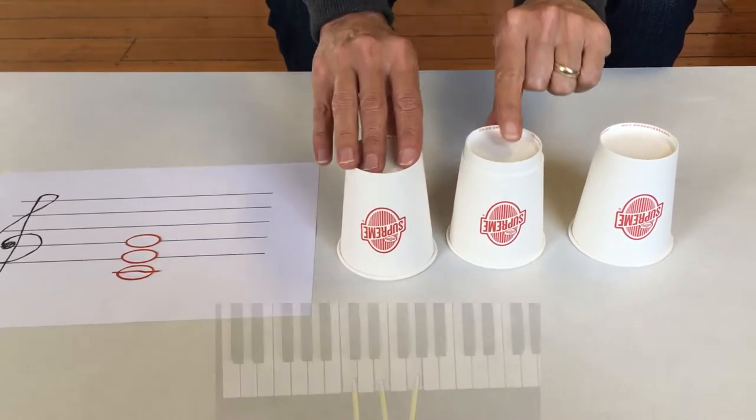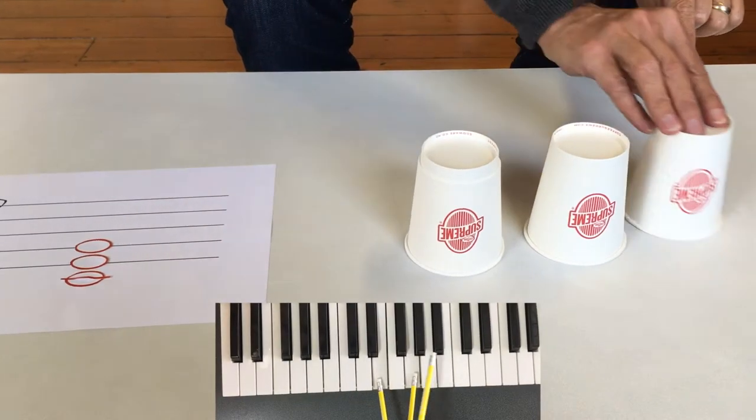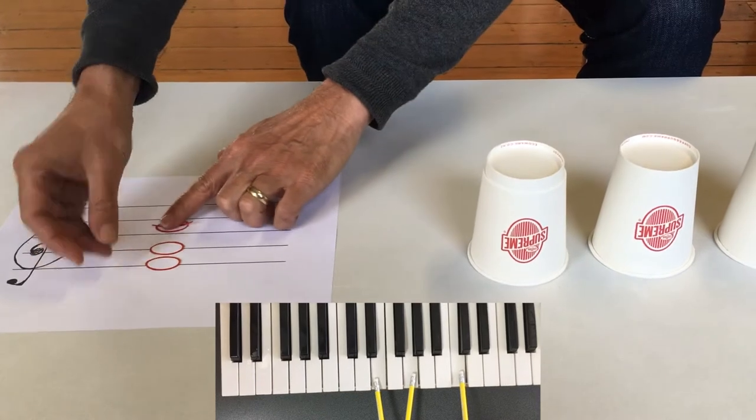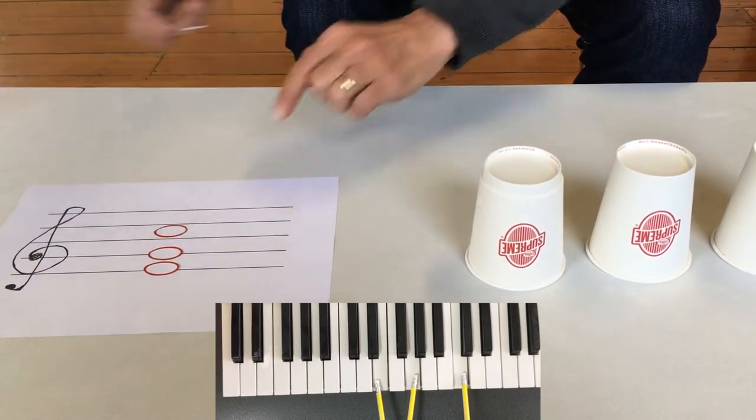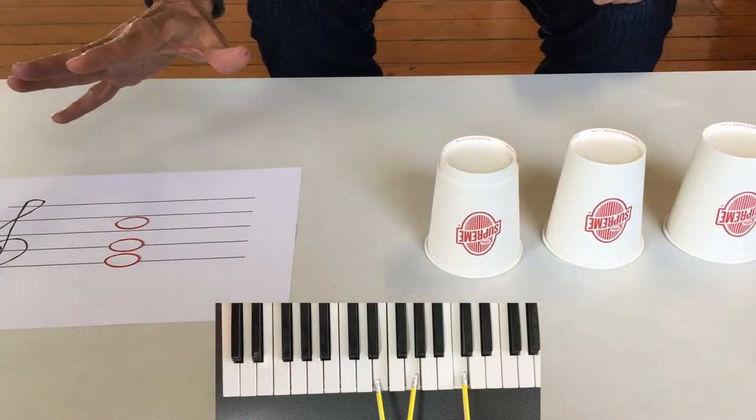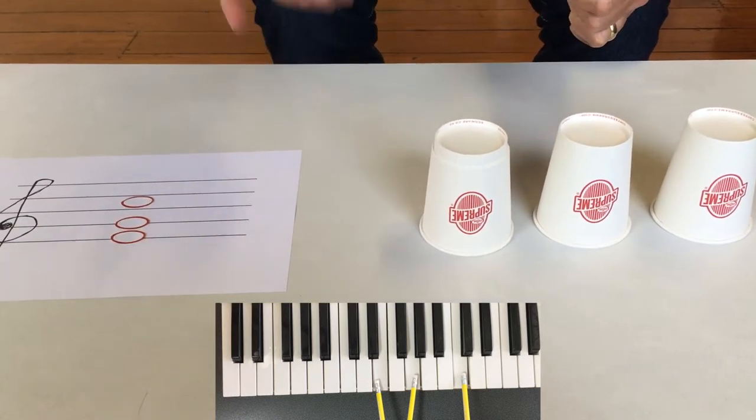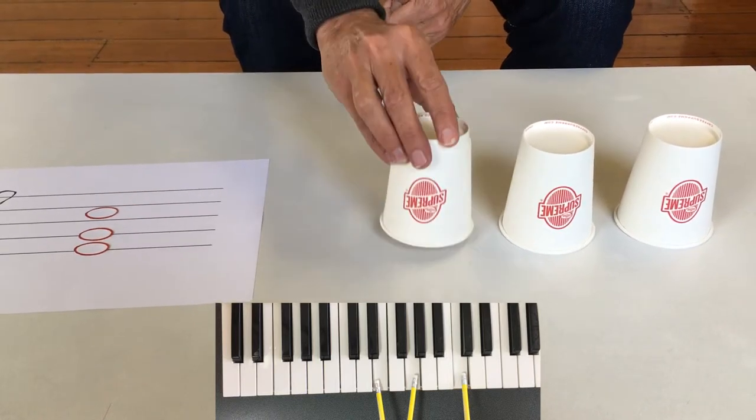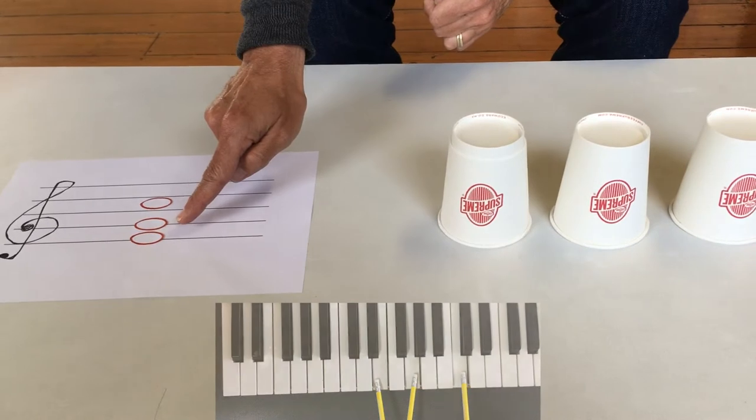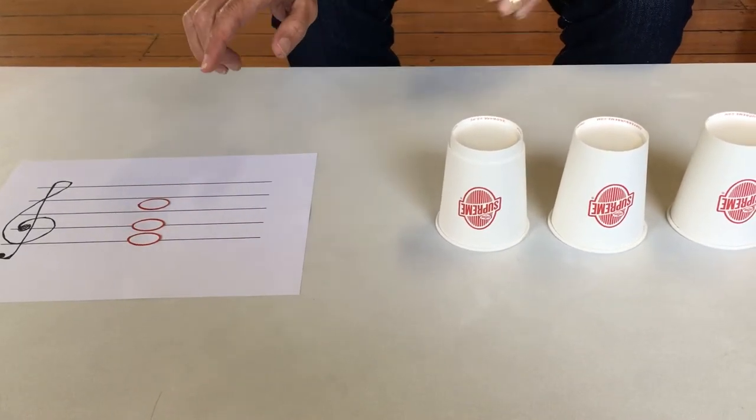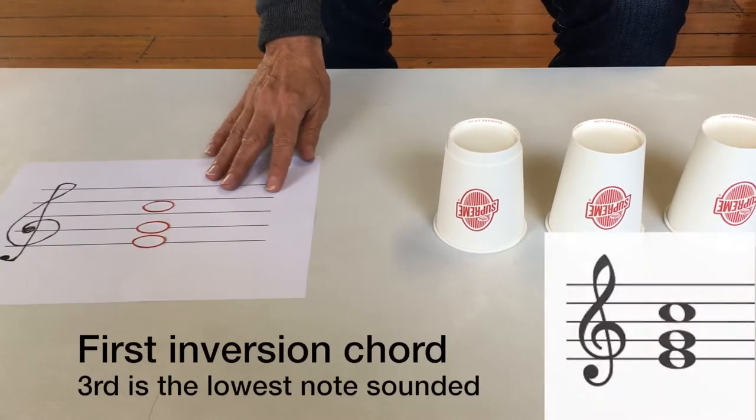But what if we perform our magic trick and move the root, like this or like this? It's the same notes but in a different order. Now the third is the lowest note that we hear. This is no longer in root position, but it's called the first inversion.